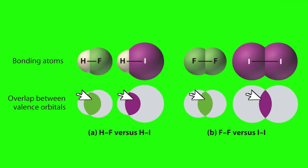In other words, the strength of a covalent bond depends on the extent of this overlap. The more the orbitals overlap, the stronger the bond.